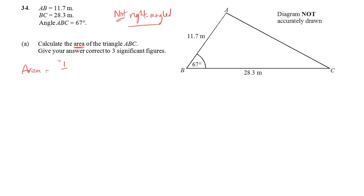So when we have two sides and the angle in between them, we can use this formula: half AB sine C. It doesn't matter what A, B and C are, as long as A and B are two sides, and C is the angle in between them.